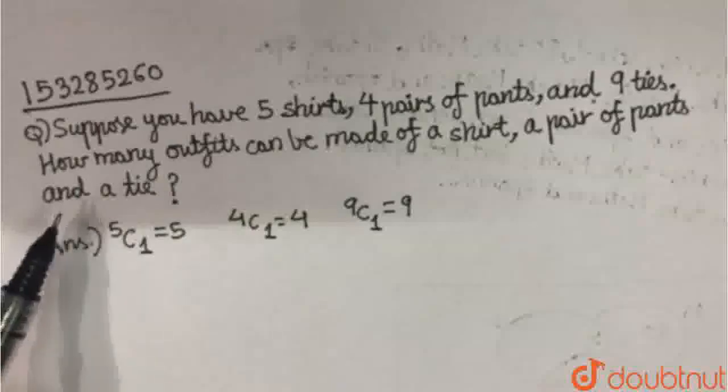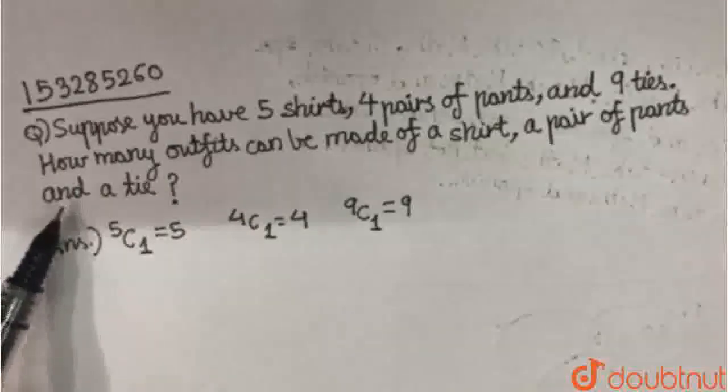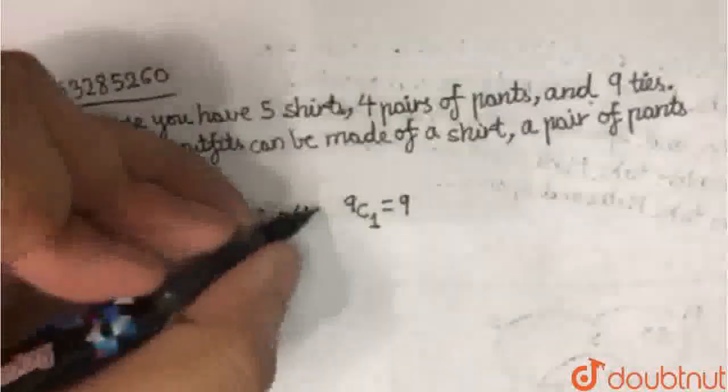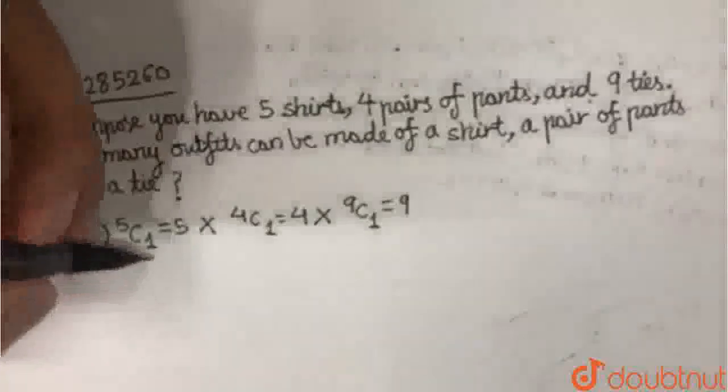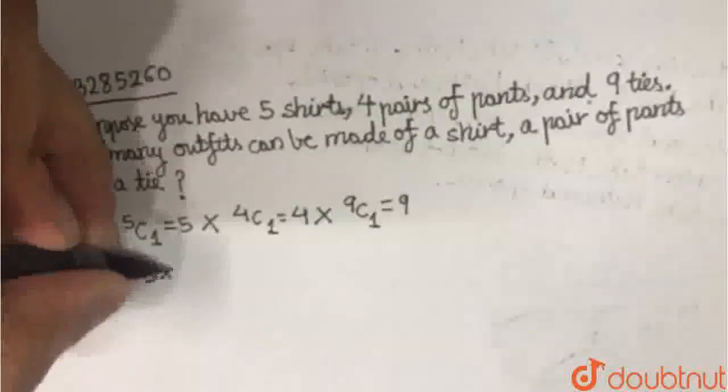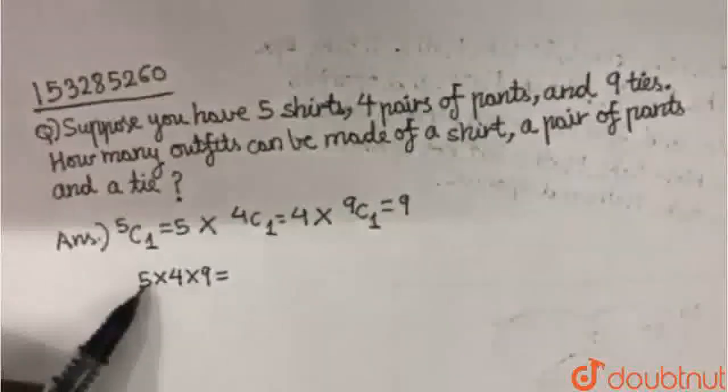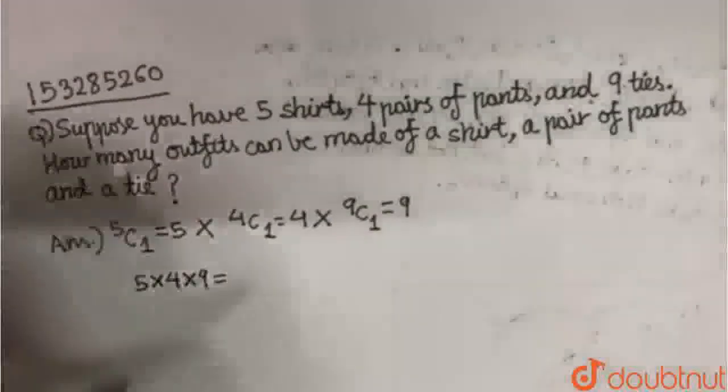This is a simple logic. Always remember: AND means multiplication, OR means addition. So here it is AND, and so we have to multiply all three. So basically 5 into 4 into 9. This is 5 into 4 is 20, and 20 into 9 is 180.